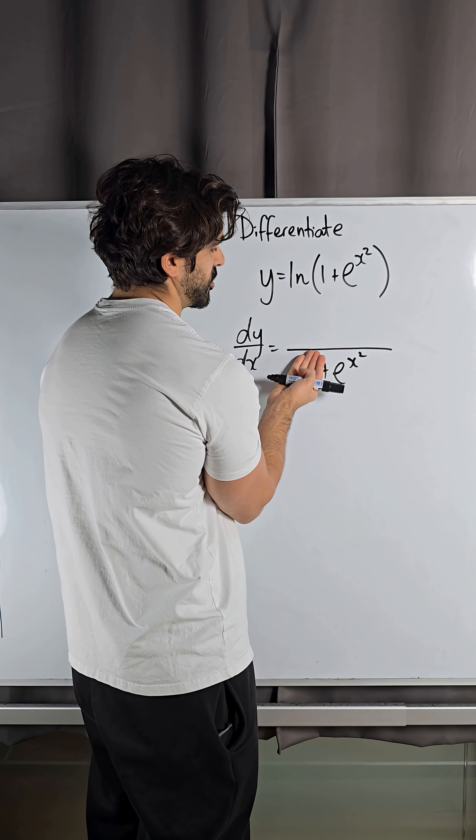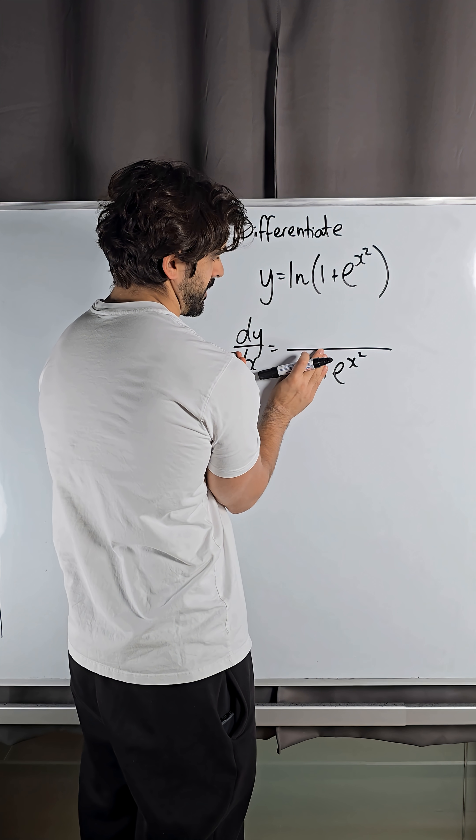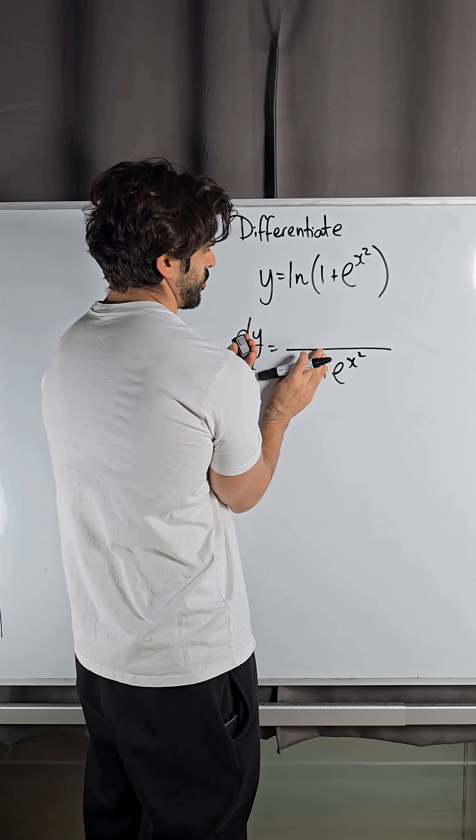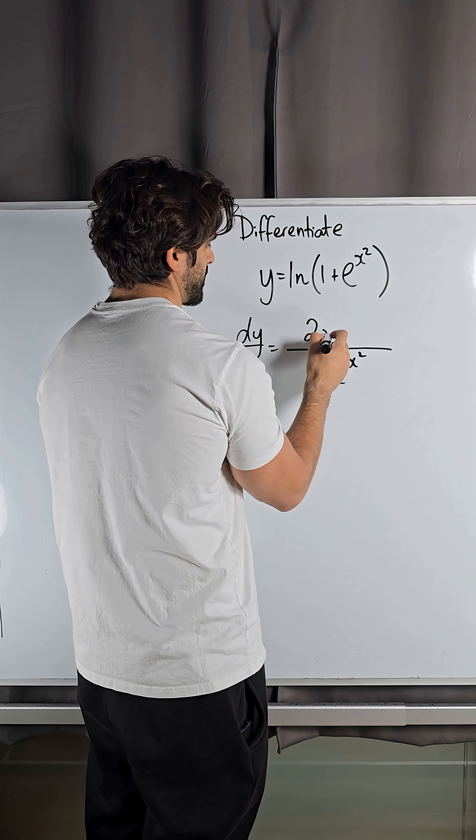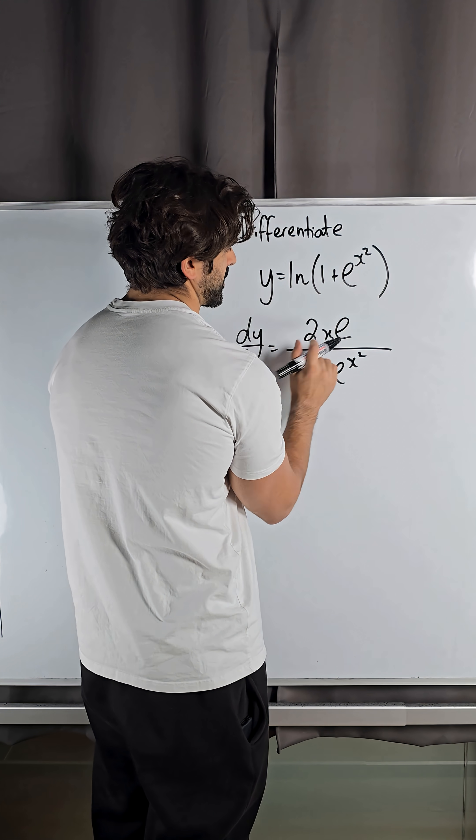1 differentiates to 0, it's just about differentiating this. To differentiate this, we use the chain rule. We differentiate the power first, which I call the angle or the argument. x squared differentiates to 2x. e differentiates to e, and the power stays the same.